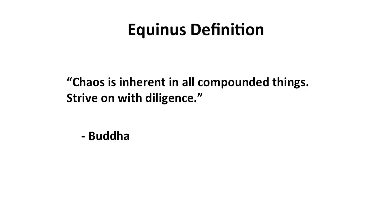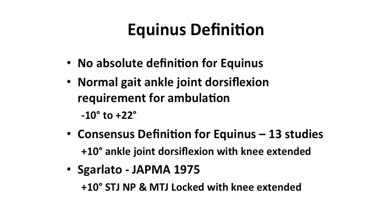Equinus definition. As Buddha said, 'Chaos is inherent in all compounded things. Strive on with diligence.' Part of the confusion associated with Equinus is there is no absolute definition for it. Normal gait ankle joint dorsiflexion requirement for ambulation has been described in the literature to range from negative 10 degrees to plus 22 degrees. The consensus definition for Equinus based on 13 different studies is plus 10 ankle joint dorsiflexion with the knee extended.